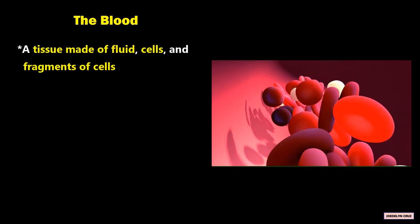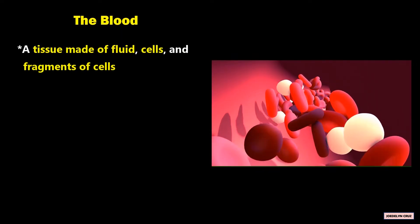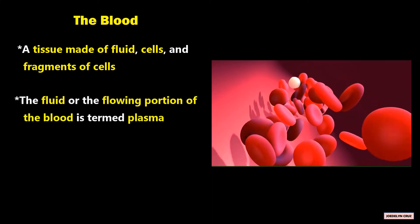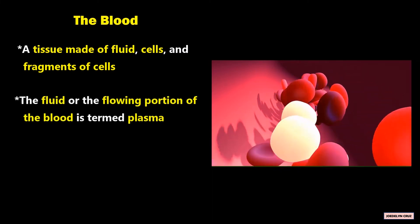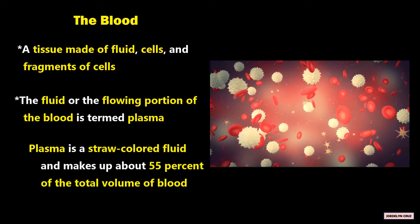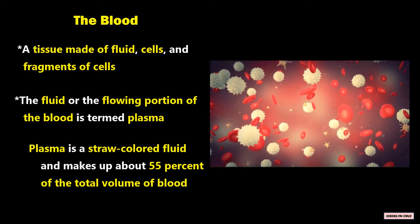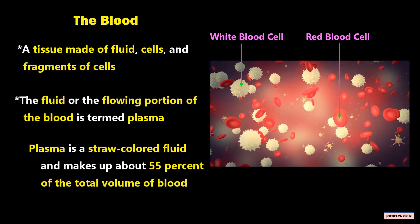The blood is a tissue made of fluid, cells, and fragments of cells. The fluid or the flowing portion of the blood is termed plasma. Plasma is a straw-colored fluid and makes up about 55% of the total volume of blood. Red and white blood cells and platelets are suspended in plasma.